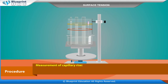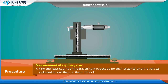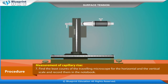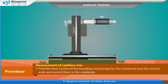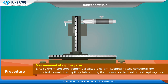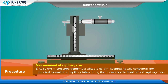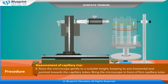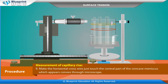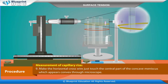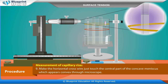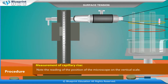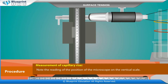Measurement of capillary rise: Find the least counts of the travelling microscope for the horizontal and vertical scale and record them in the notebook. Raise the microscope gently to a suitable height keeping its axis horizontal and pointed towards the capillary tubes. Bring the microscope in front of the first capillary tube. Make the horizontal cross wire just touch the central part of the concave meniscus, which appears convex through the microscope. Note the reading of the position of the microscope on the vertical scale.